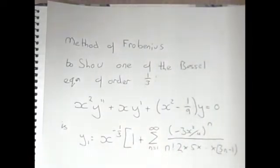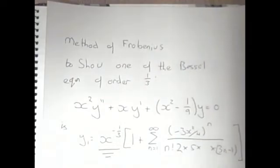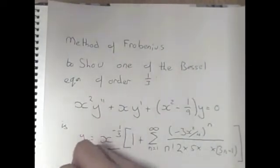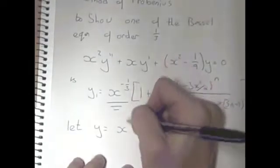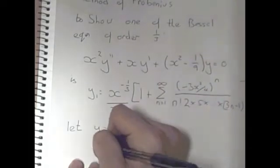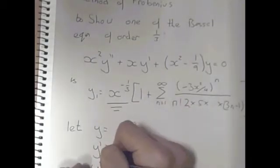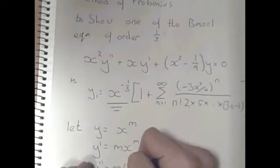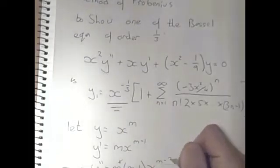Your answer will normally be split into three parts. The first part is showing what the power is — the x to the minus one third. It's pretty easy. You let y equal x to the m, then differentiate: y dash equals m x to the m minus 1, and y double dash equals m open m minus 1 close, x to the m minus 2. Then you put these three into the equation they've given you — the bit I'm starring now.